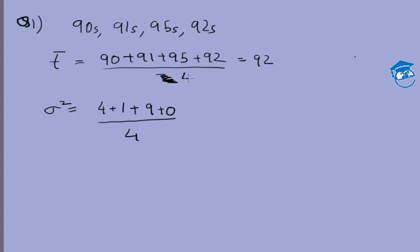So this should be 4, I'm sorry I don't know why I wrote 2, this is 4. So 4 plus 1 plus 9 plus 0 by 4 which turns out to be equal to 14 by 4 or 3.5, and from that if you calculate σ it will approximately come out to be 1.8.